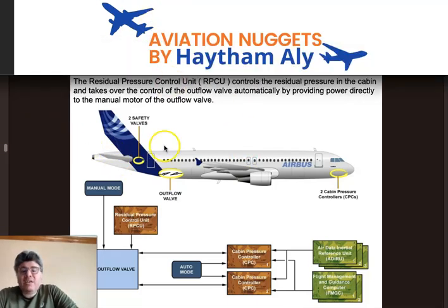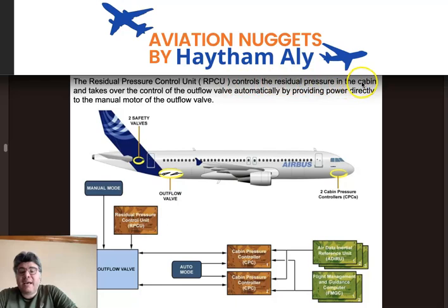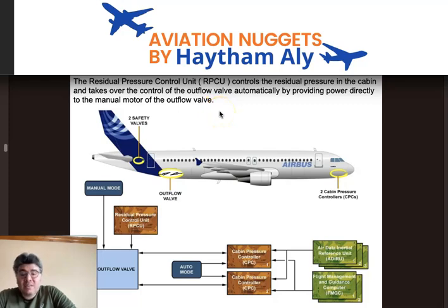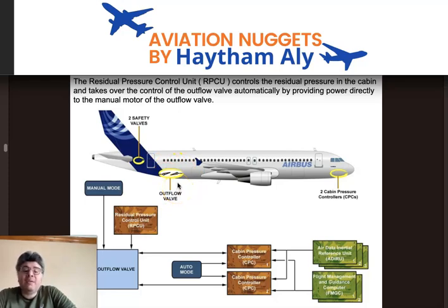There is also a unit called the Residual Pressure Control Unit (RPCU). The RPCU controls the residual pressure in the cabin and takes over control of the outflow valve automatically by providing power directly to the manual motor when the aircraft lands. Once on the ground, we must ensure the outflow valve is fully open as the aircraft taxis to the gate.